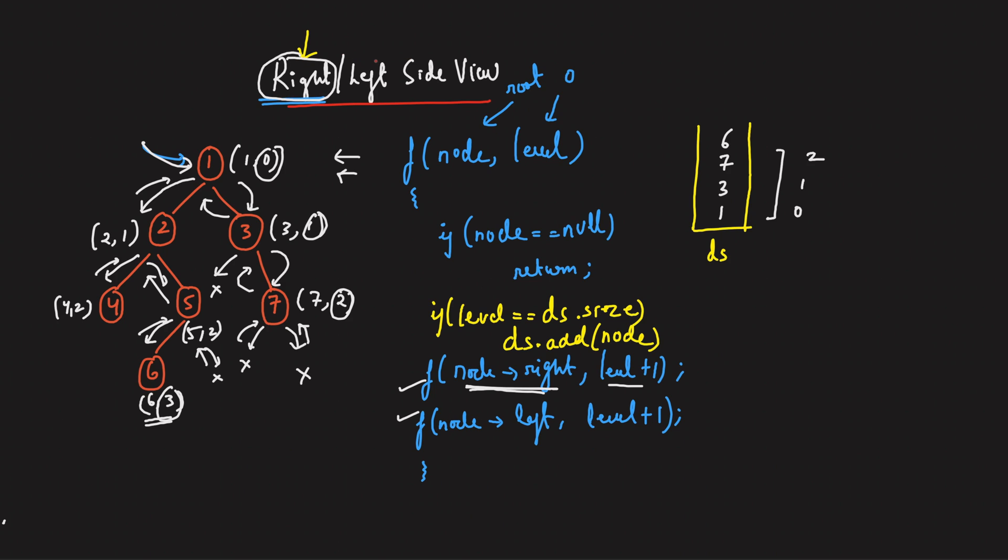If I ask you a question, how to get a left side view of a binary tree, can you tell me in the comment section? What will be the answer? Very simple. Instead of right, left, you will move left, right in order to get the left side view of the binary tree. Simple enough.